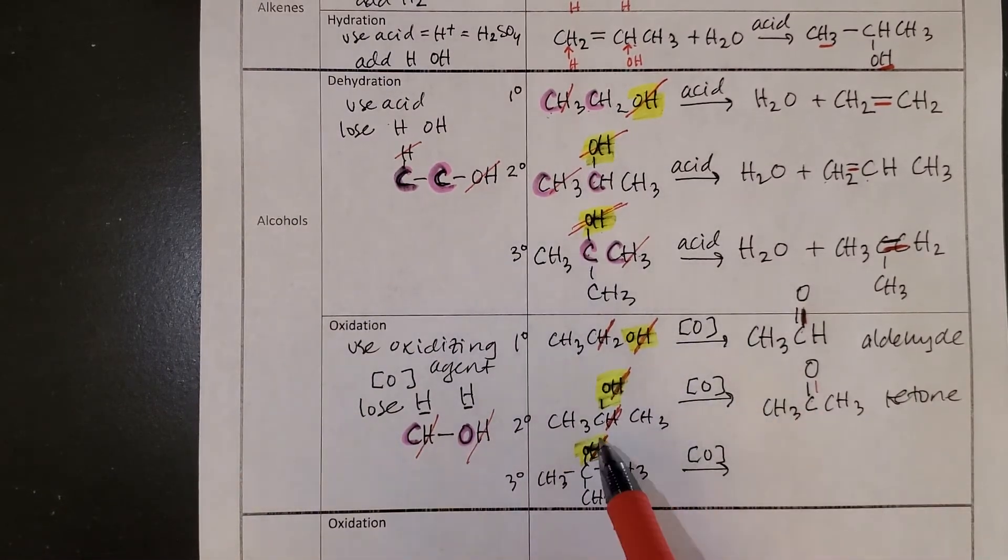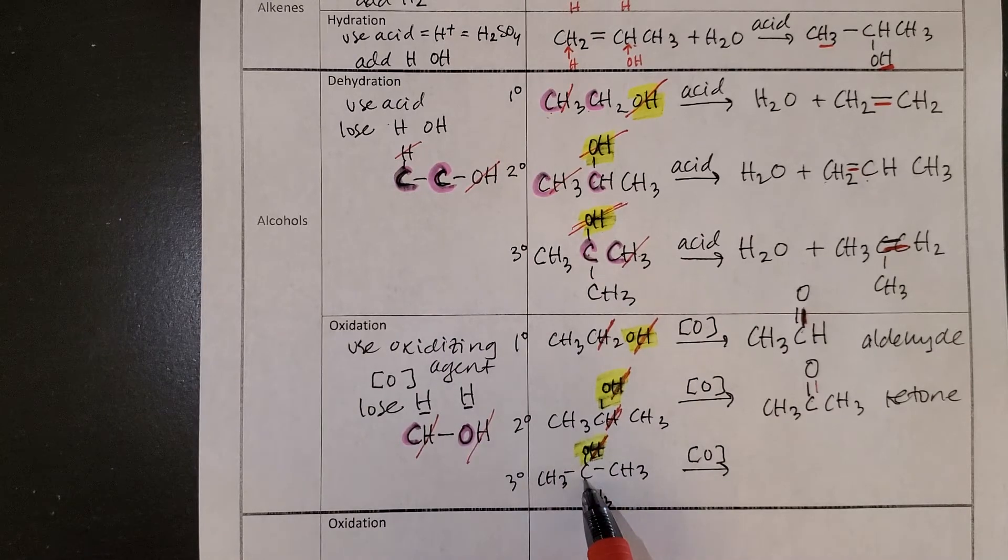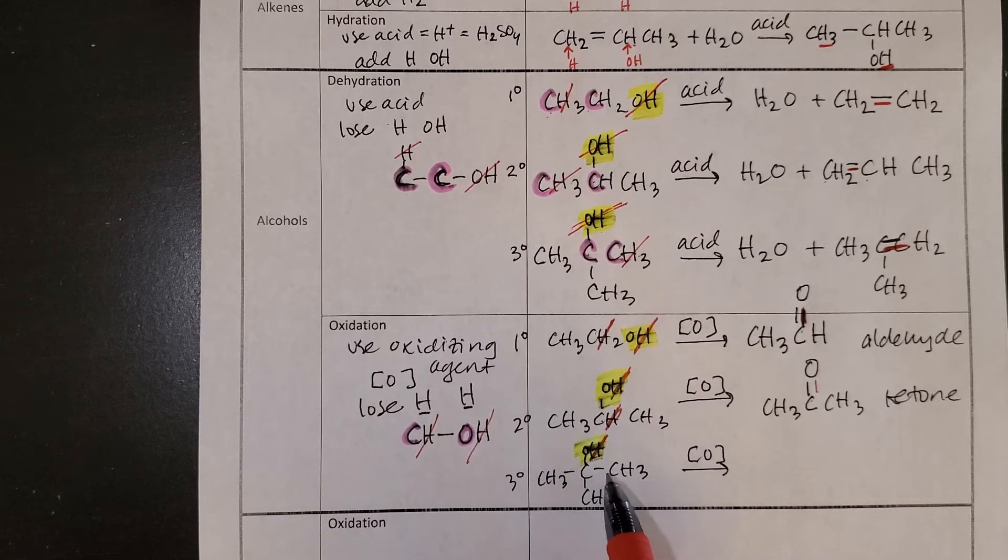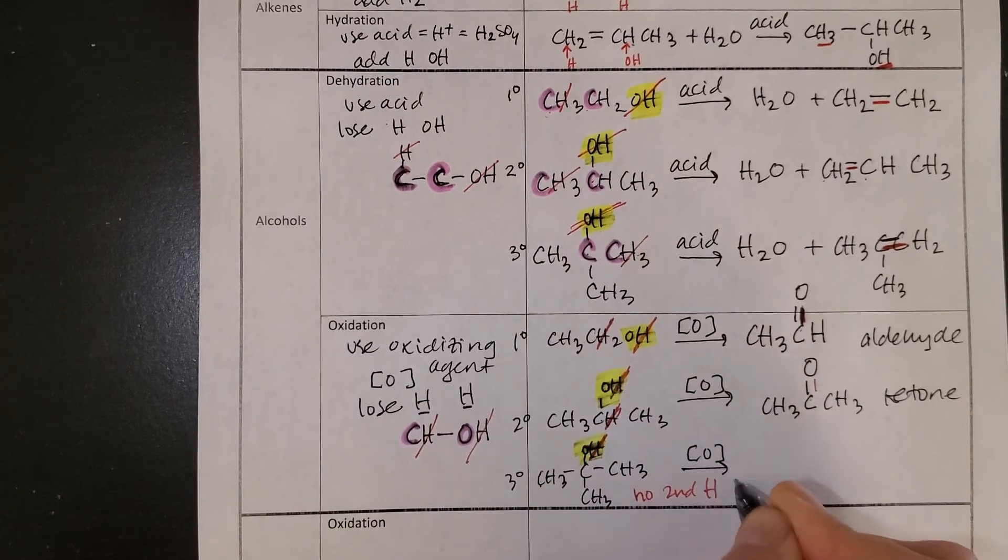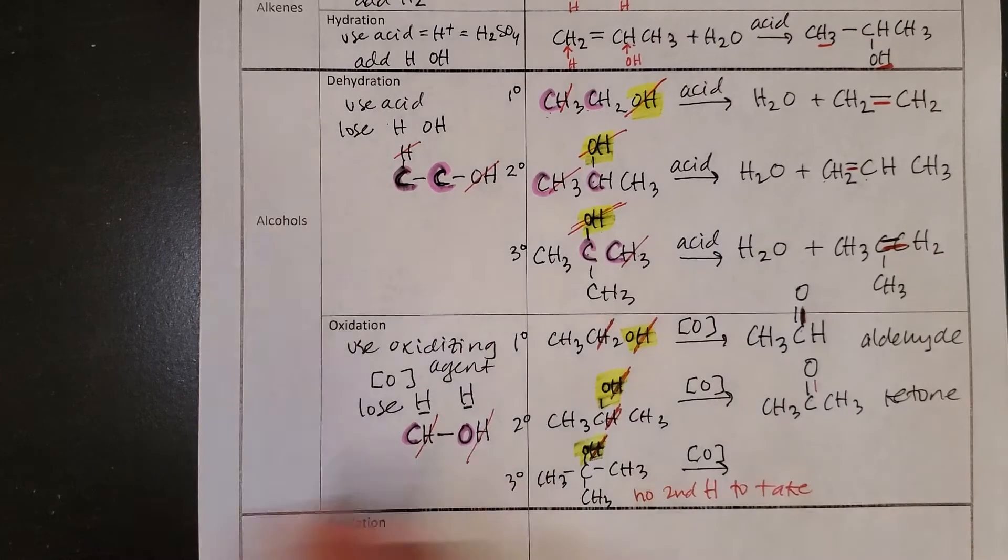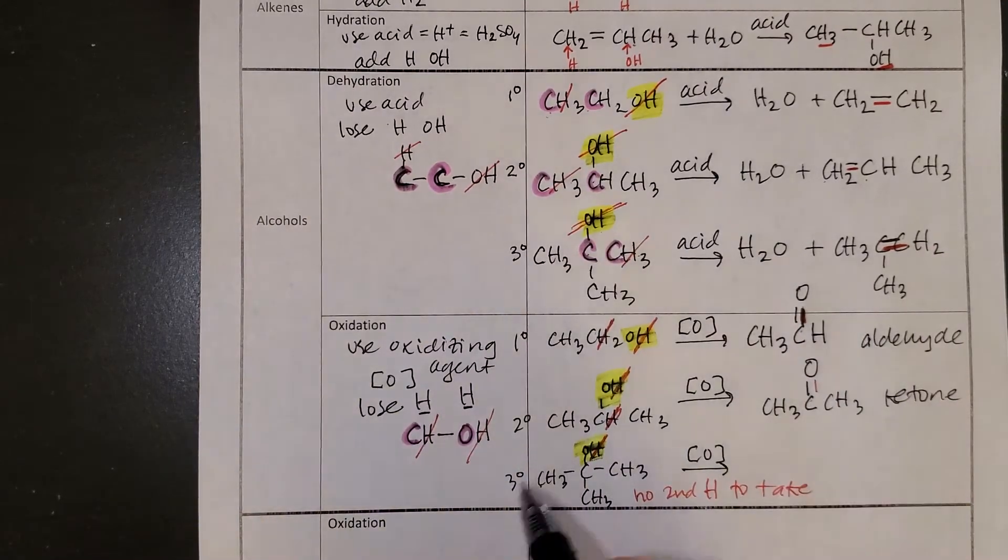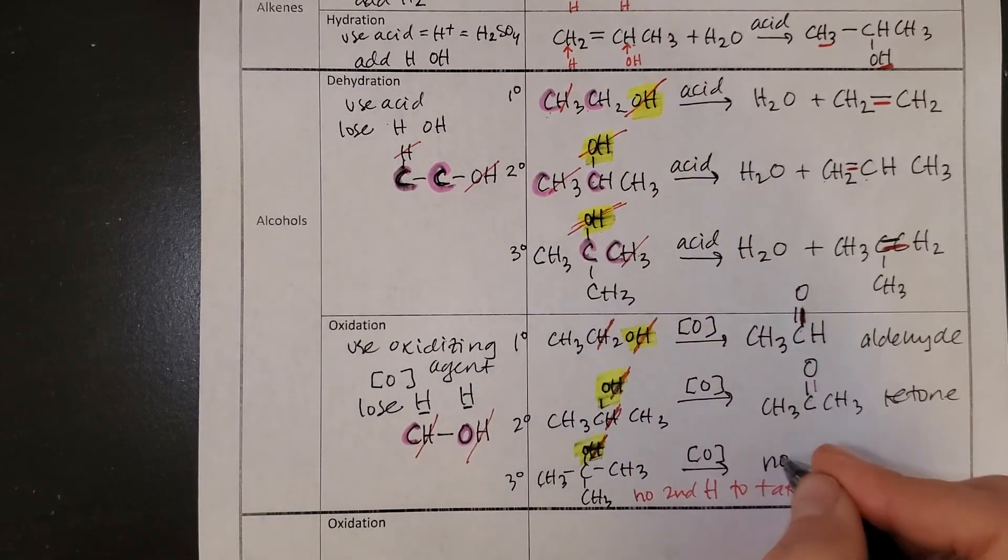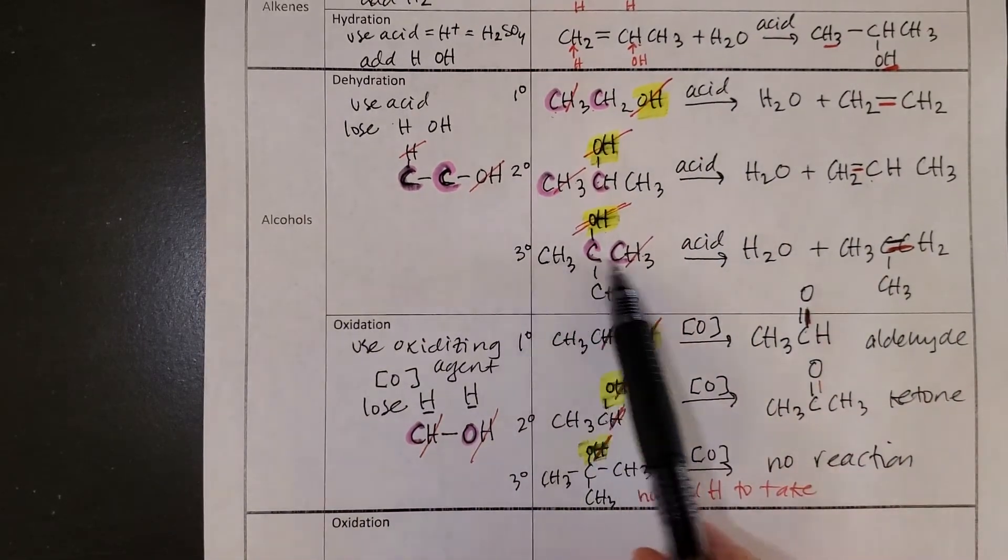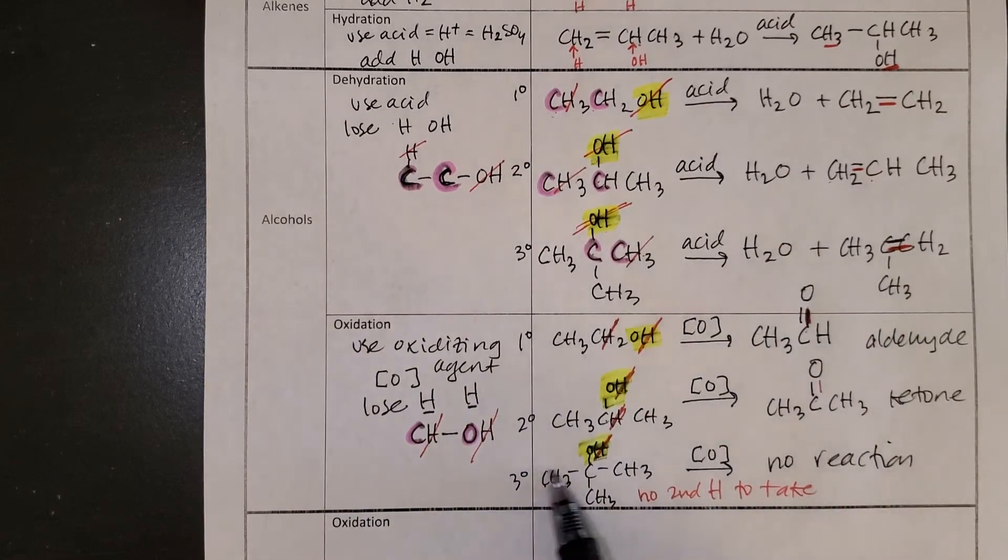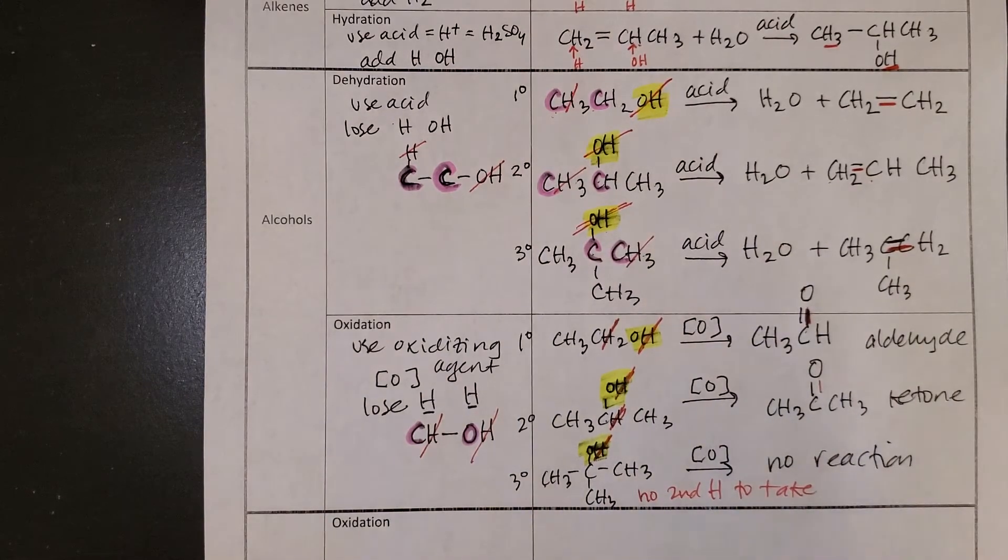I need to find the things that I lose. I first lose the H on the O, and then I go to its neighboring carbon. And if you look, this carbon is connected only to other carbons. So there is no second H to take. Therefore, we say that tertiary alcohols cannot react. They cannot be oxidized. We can dehydrate a tertiary alcohol. We cannot oxidize a tertiary alcohol.